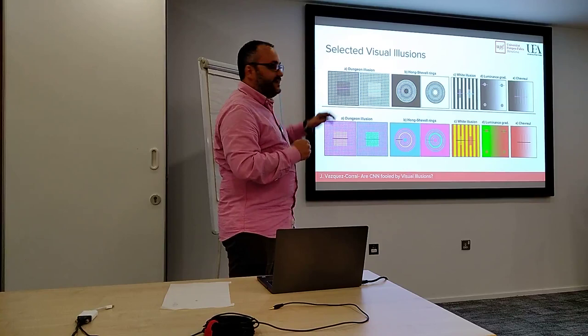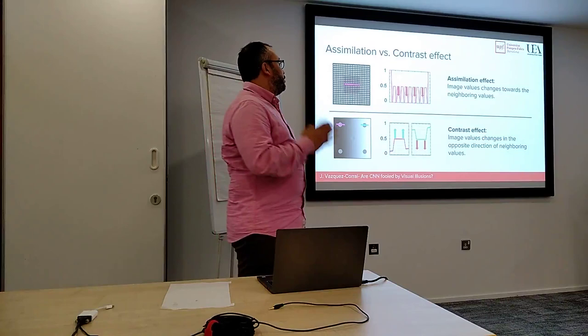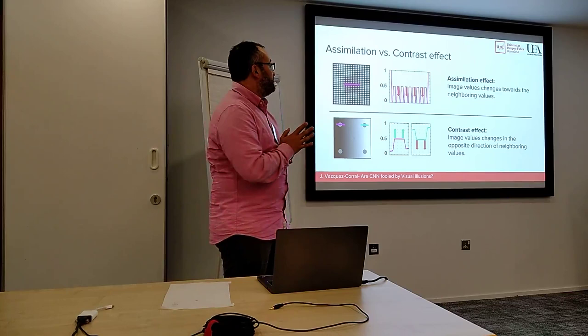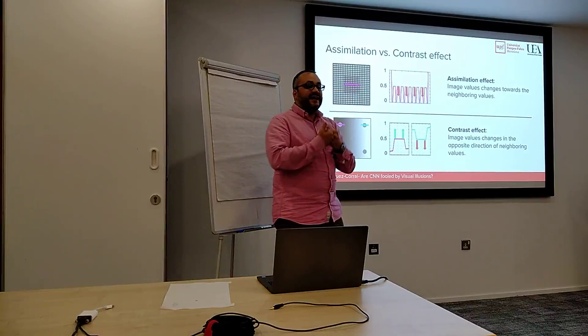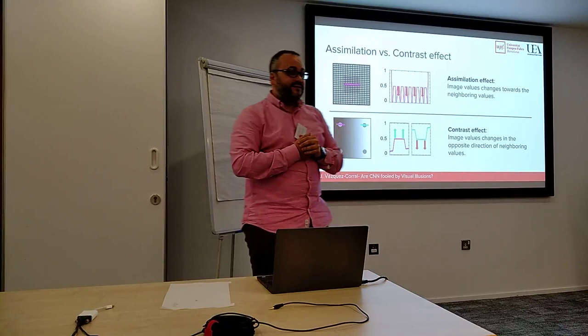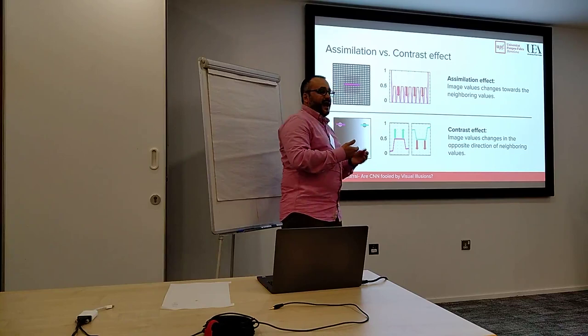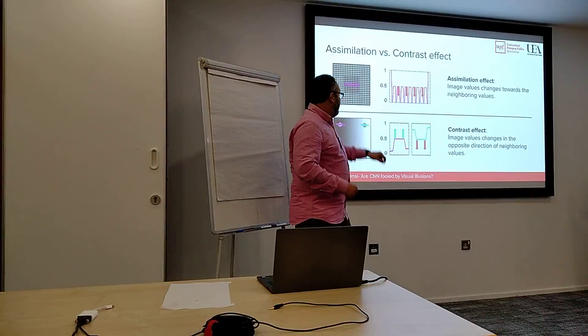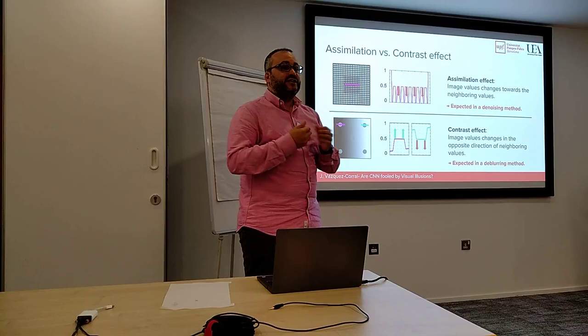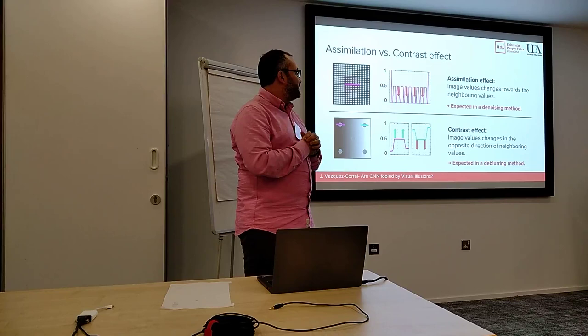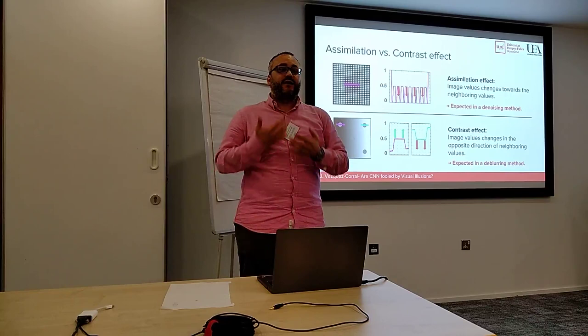Here are the visual illusions we deal with, both in black-and-white and color versions. We classify them into two types: assimilation and contrast. Assimilation illusions are those where values change towards the neighboring values — for example, a gray patch gets darker due to surrounding dark elements. Contrast effects are the opposite: something looks lighter on one side and darker on the other, opposite to the surrounding values. Importantly, assimilation can always be expected from a denoising algorithm, and contrast from a de-blurring method — but never the opposite behavior in a typical method.